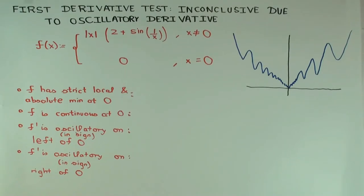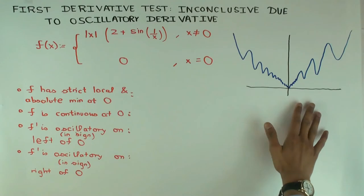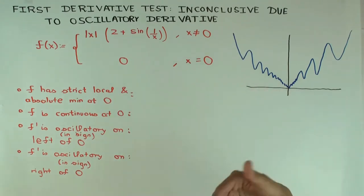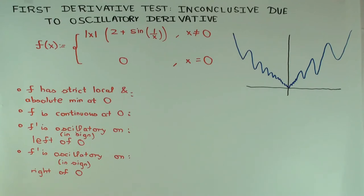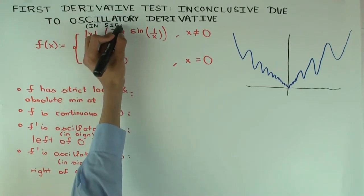In this talk, I'm going to consider one of the situations where the first derivative test is inconclusive — that is, where the first derivative oscillates in sign between positive and negative on the immediate left, or the same problem happens on the immediate right, or both sides. Therefore, you cannot figure out whether it's actually a local min or max. It could be either, it could be neither. The derivative sign is oscillating on the immediate left.